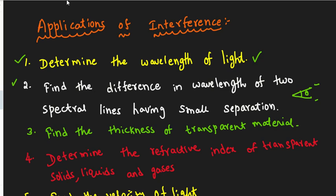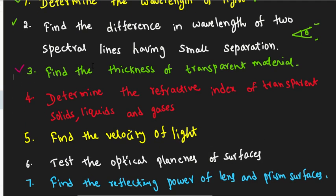The third application is to find the thickness of a transparent material. If you have a thin film, you can measure its thickness using the wedge method. This is the process we use for measuring thin film thickness.